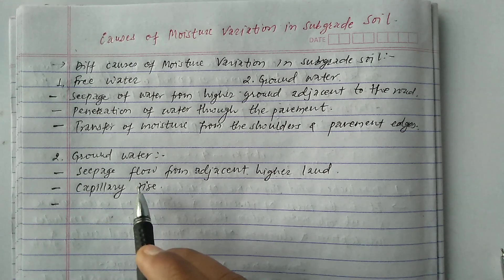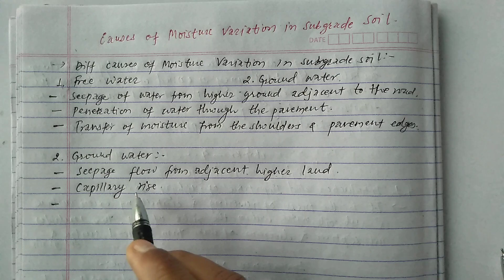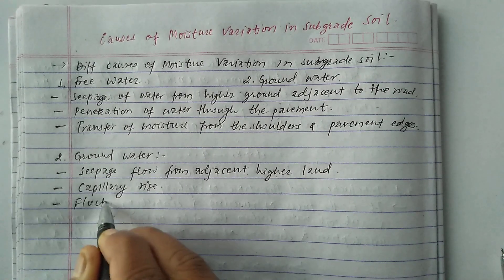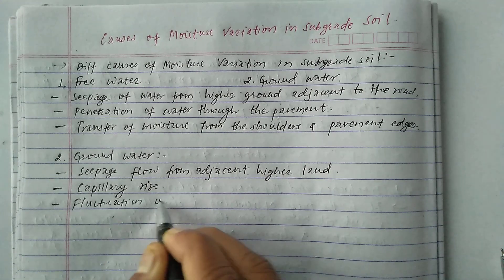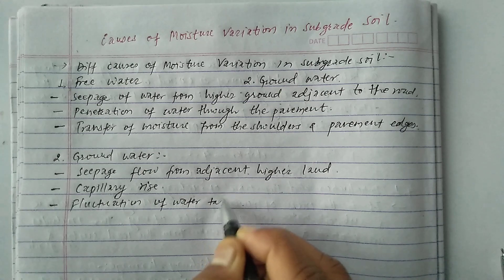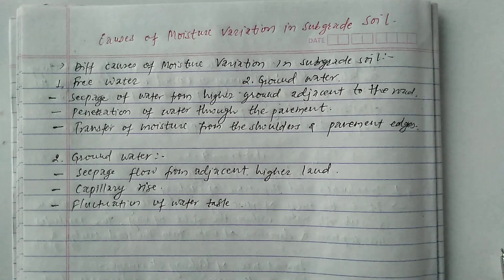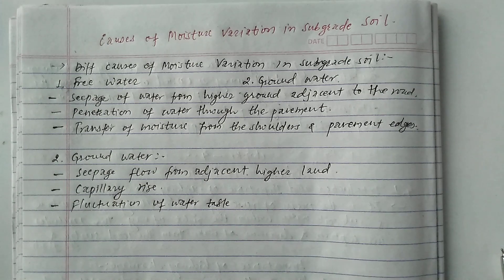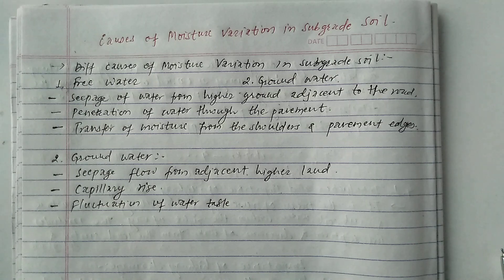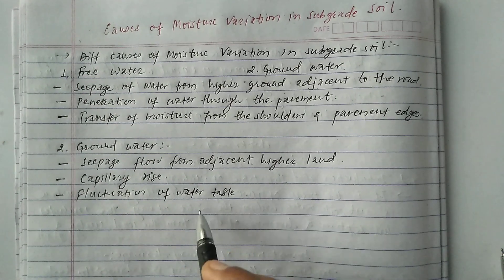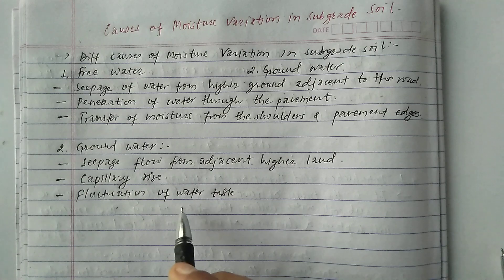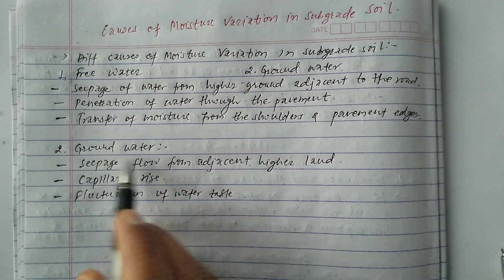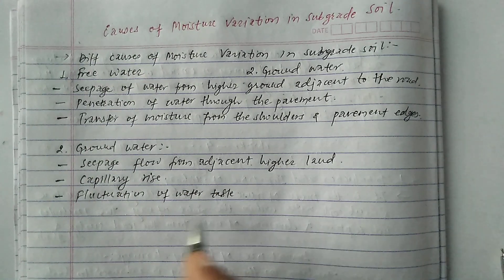After capillary rise, the third groundwater cause is fluctuation of the water table. Whenever the water table increases or decreases, the moisture variation also increases or decreases in the subgrade soil. So fluctuation of the water table is also one of the causes of moisture variation.